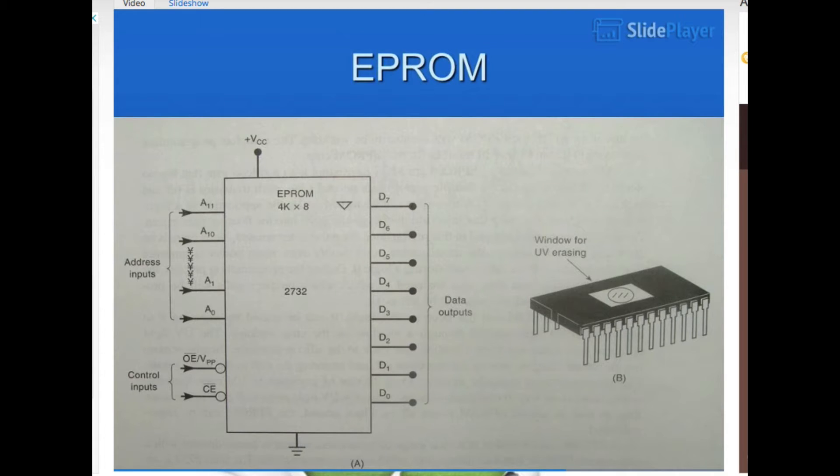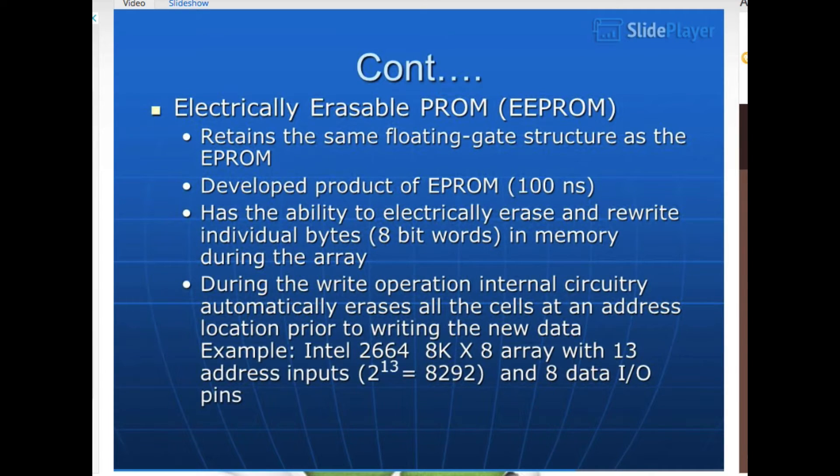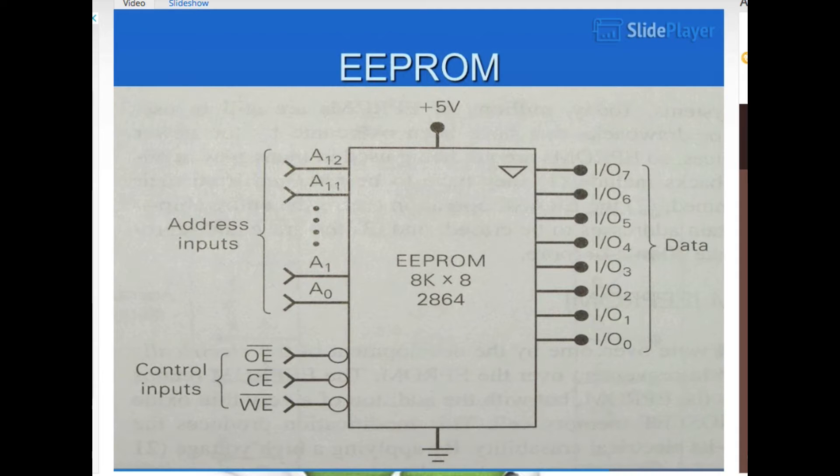EPROM truth table. Continuation. Electrically erasable PROM, EEPROM, retains the same floating gate structure as the EPROM. Developed product of EPROM, 100 nanoseconds, has the ability to electrically erase and rewrite individual bytes, 8-bit words, in memory during the array. During the write operation, internal circuitry automatically erases all the cells at an address location prior to writing the new data. Example: Intel 2864, 8K by 8 array with 13 address inputs. 2 to the 13 equals 8192, and 8 data I/O pins. EEPROM truth table.